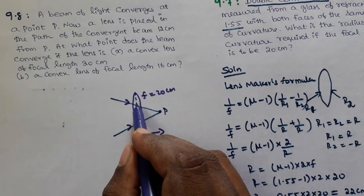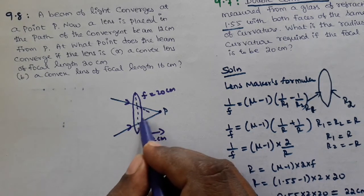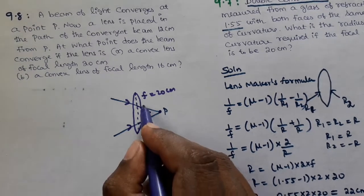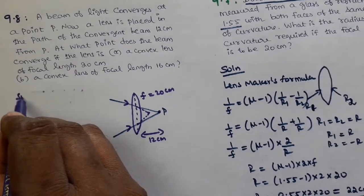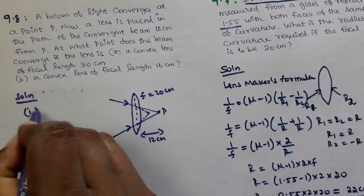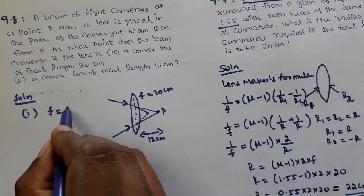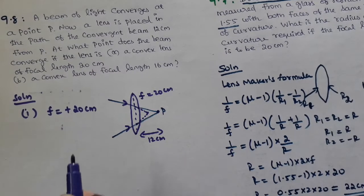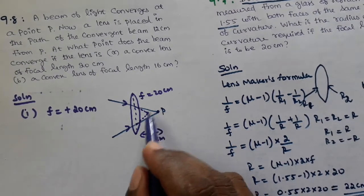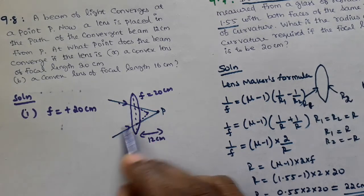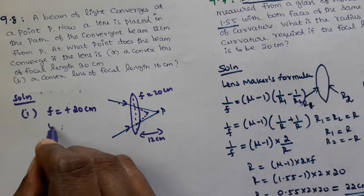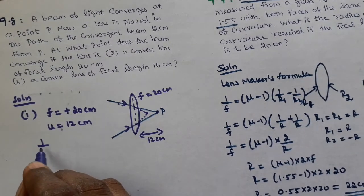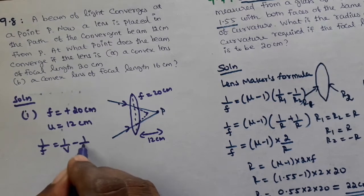Since the ray is already converging and the convex lens is a converging lens, F = +20 cm. Point P would have been the image, but now with the lens, point P acts as a virtual object. Using the lens formula: 1/F = 1/V - 1/U.